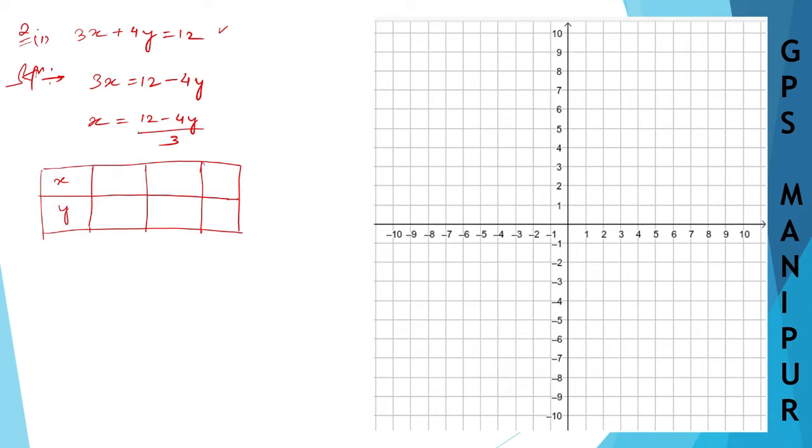Now when y is equal to 0, x will be equal to 12 minus 4 into 0 divided by 3. So 12 minus 4 times 0 is 0, so 12 divided by 3, 3 times 4 is 12. So when y is 0, x is 4.